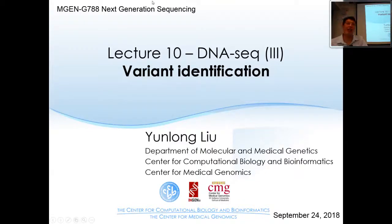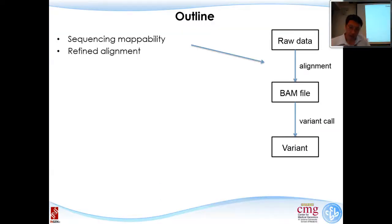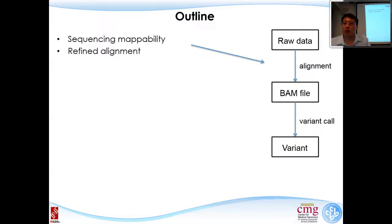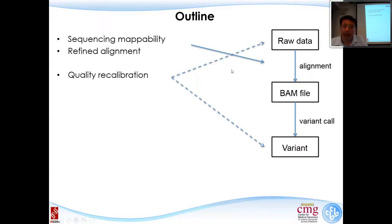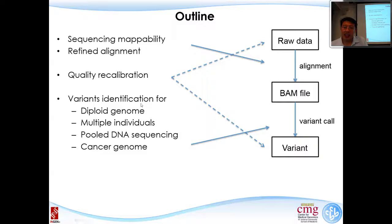We will start the third lecture on DNA sequencing, with today's topic focusing on variant identification. As mentioned in the last lecture, there are two lectures devoted to bioinformatics data processing for DNA sequencing. The first part covers sequence mappability and refined alignment, then quality recalibration of raw base quality, and today we'll also cover variant quality recalibration. The third topic is variant identification from BAM to variant calls.